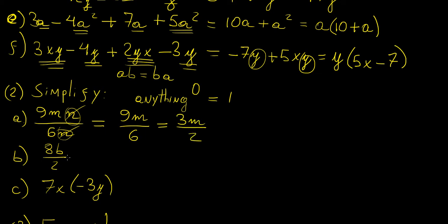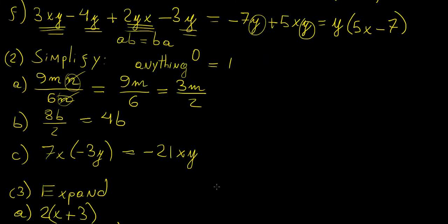Continuing to the next one, we simply divide to simplify the fraction, giving 4b. For the multiplication example, we have 7 times 3, which is minus 21 because of the negative sign, and x times y are different pronumerals, so the result is minus 21xy.